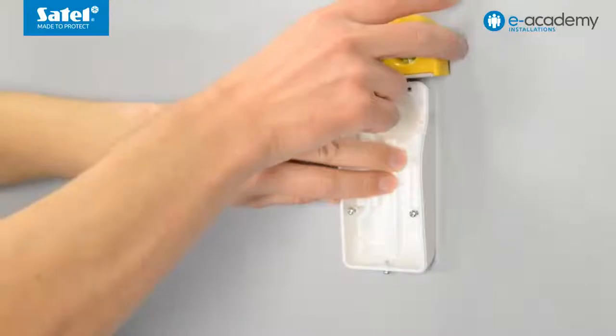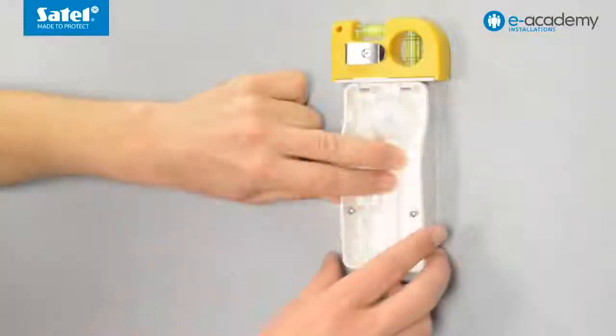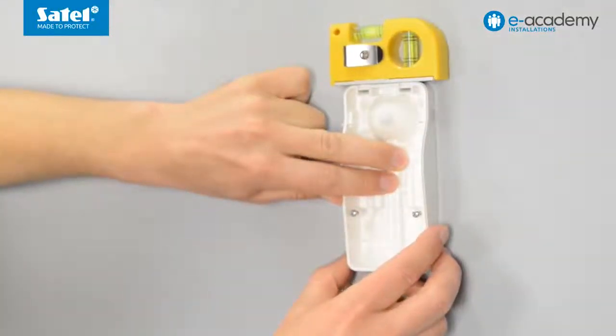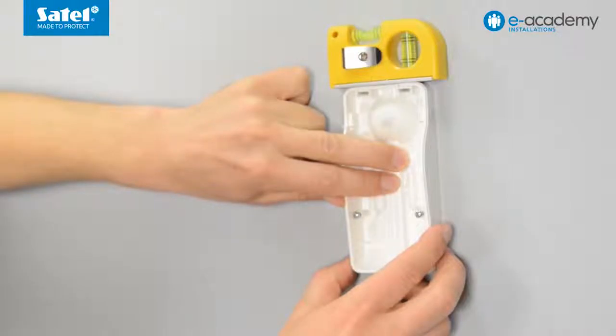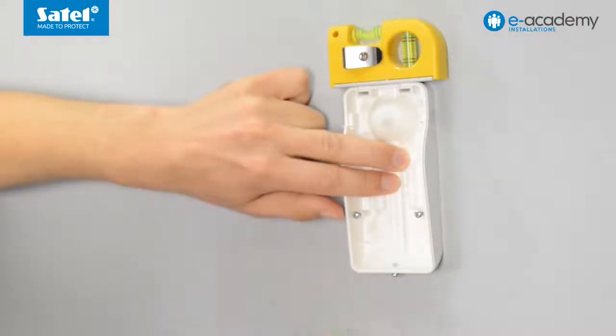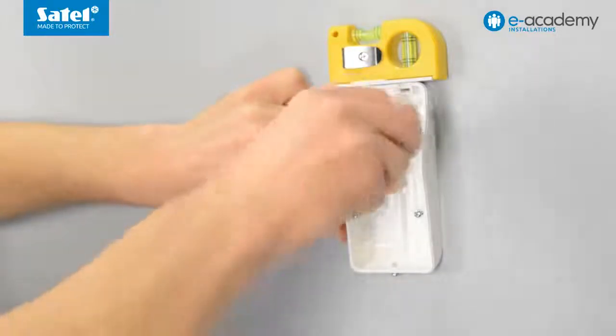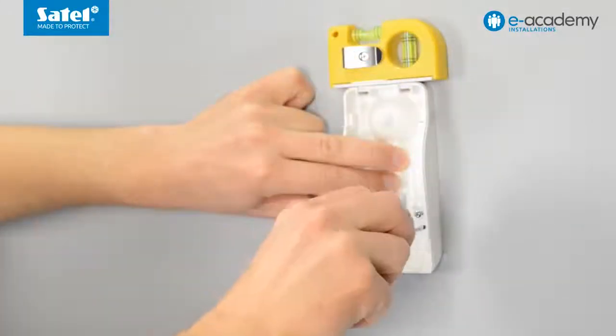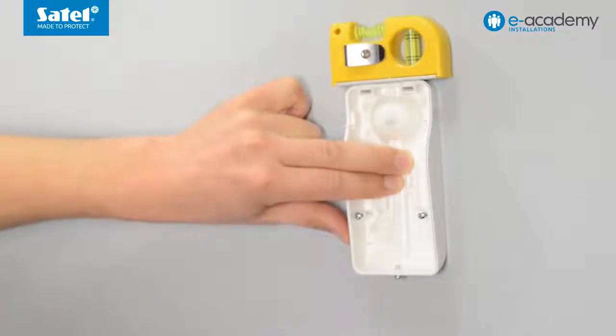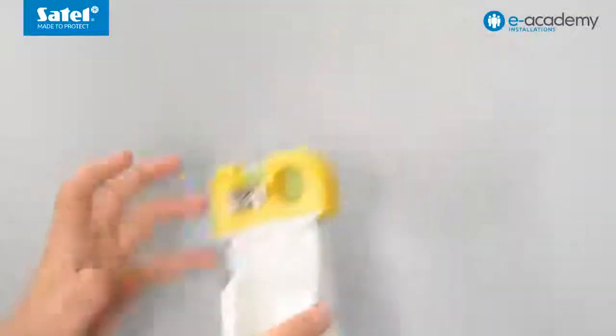Place the detector base against the wall at the desired height and use a spirit level to make sure it is positioned strictly horizontal. Using a screwdriver, mark the points on the wall where the mounting holes are to be drilled. Be particularly careful not to move the enclosure base when you are marking the mounting points.